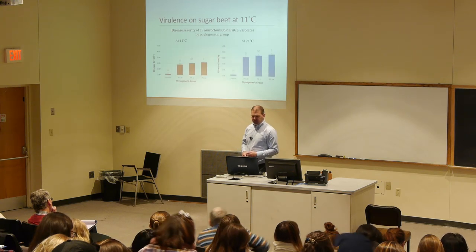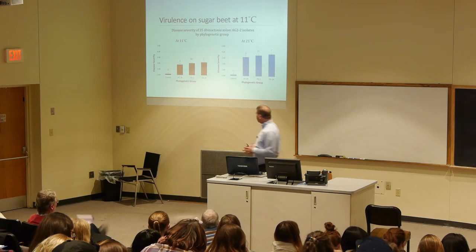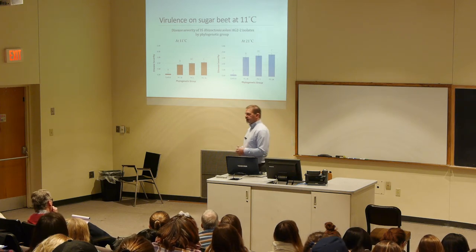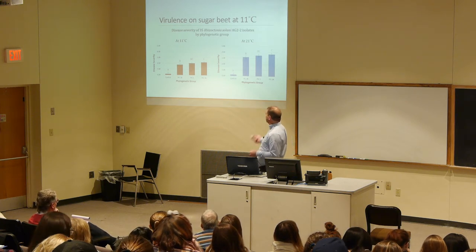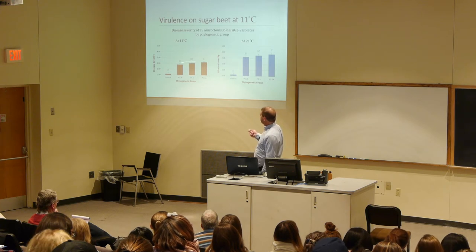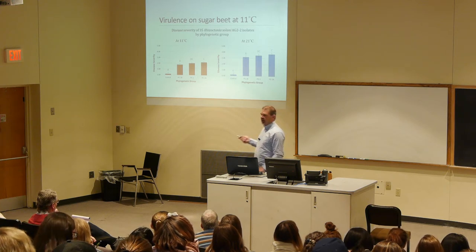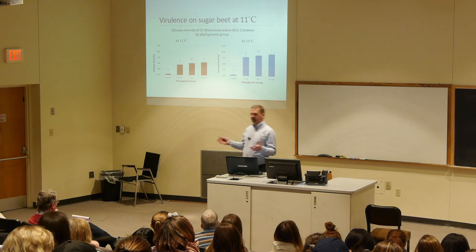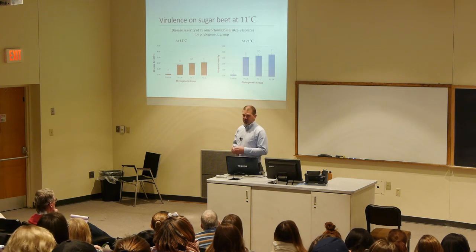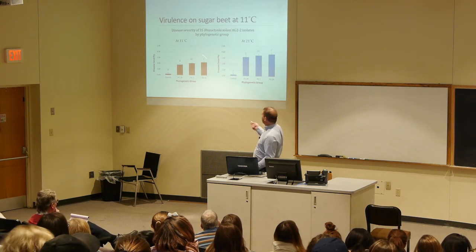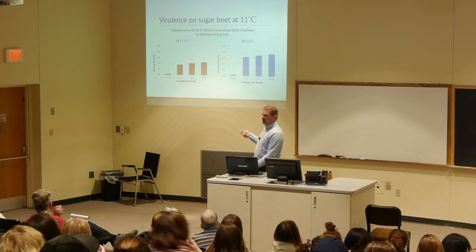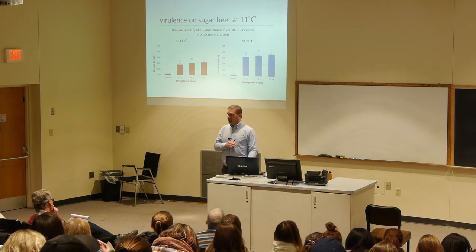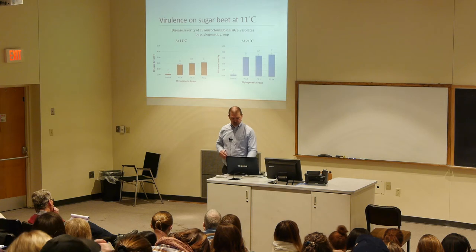We compared the results to the phylogenetic groups to see if any groups had more aggressiveness at low temperature, and there really isn't a strong difference. We do have some statistically significant differences, but that's an important point: statistically significant isn't the same as biologically significant. What is biologically significant is that all groups on average cause more disease than the un-inoculated control — so clearly there's a concern about infection below 15°C.